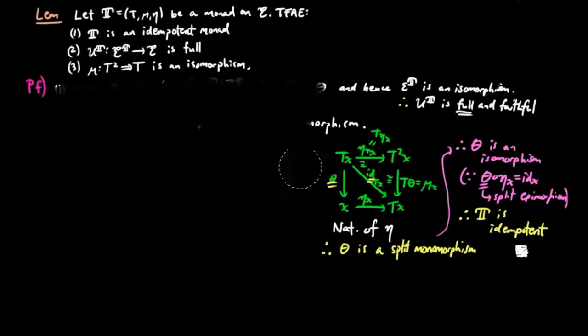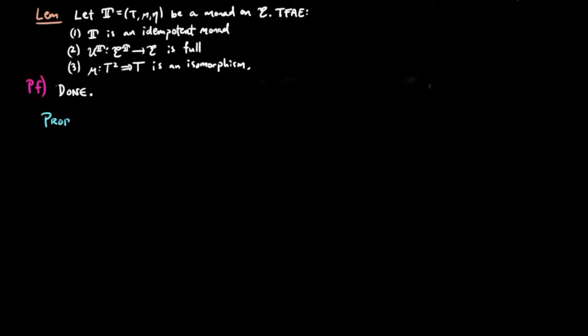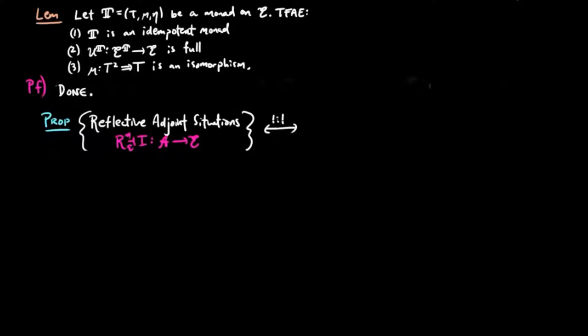Now we come to the main result of this section. Reflective adjoint situations over the category E are in a 1-to-1 correspondence, up to equivalence of categories, with idempotent monads on E.